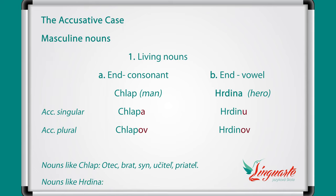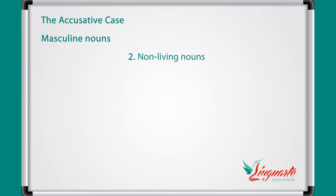Nouns like hrdina are cyklista, vodca, hokejista. The non-living nouns also have two types: nouns ending in a hard or bilabial consonant — these are nouns ending with b, m, z, d, t, l, k. One example is dub.